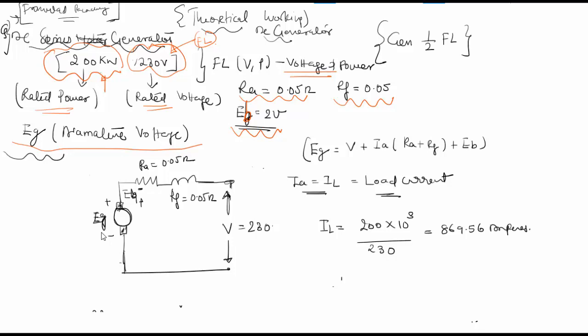EG can be computed as 230 plus IA, which equals IL equals 869.56, into (RA which is 0.05 plus 0.05), plus EB which equals 2.